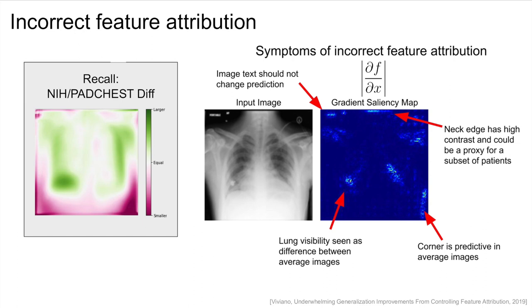In the lower right, we can see that the side of the person could change the prediction. We can see this as well in the difference between the average images — in the lower right-hand corner it is very different between the hospitals. In the lower left lung, we can also see there are pixels which can have an impact on the prediction, and again we see a large difference in the average images.